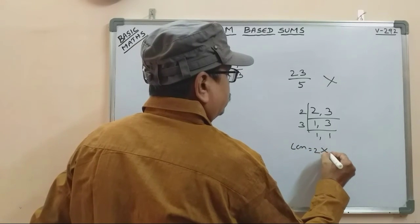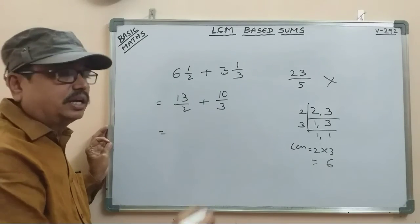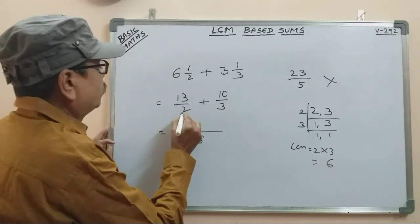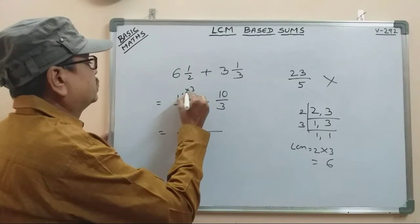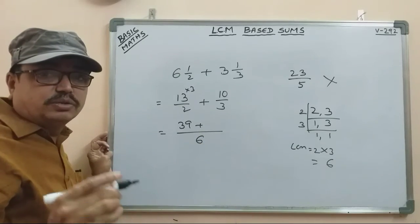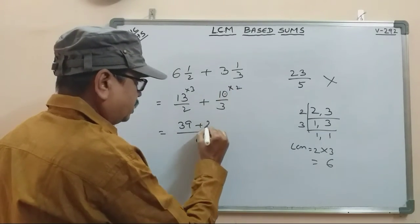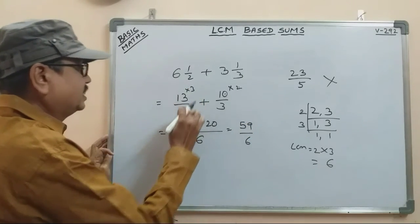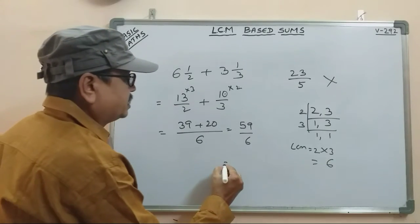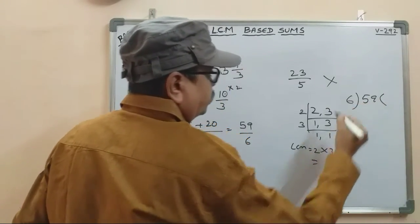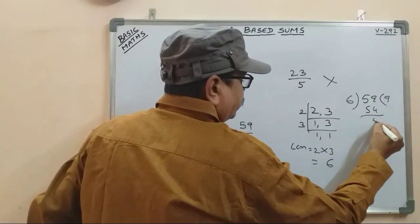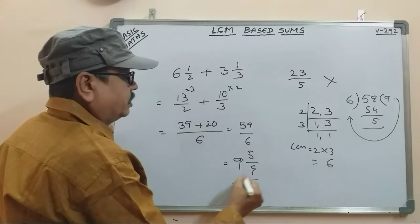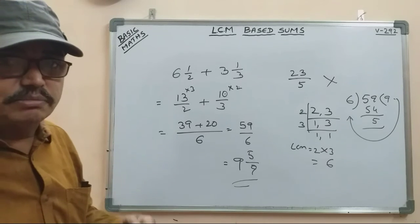LCM of 2 and 3 is 6. 2 into 1 is 3. How many 2s go into 6? 3 times. 2 into 3 is 6. 13 into 3 is 39. How many 3s go into 6? 2 times. 2 into 2 is 4, so 10 into 2 is 20. 39 plus 20 is 59. 59 by 6. 6 into 9 is 54, remainder 5. So it's 9 and 5 by 6. This is the same concept as LCM — it's easier to make mistakes without it.